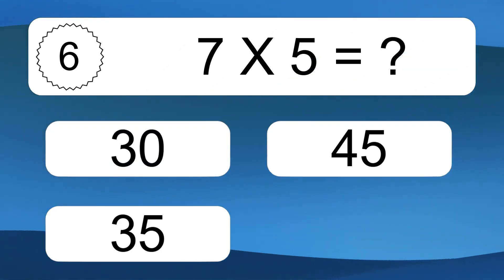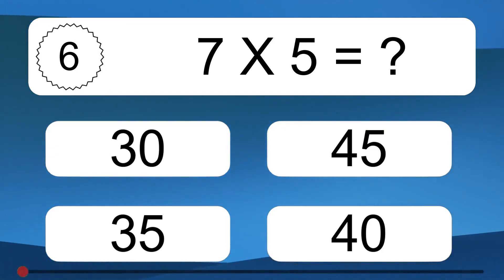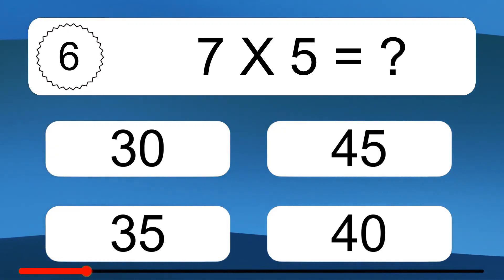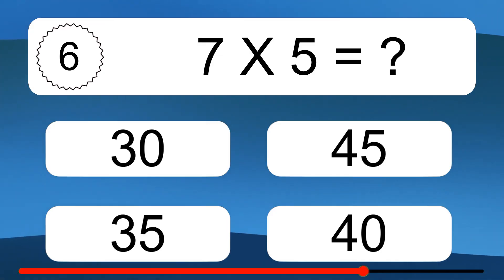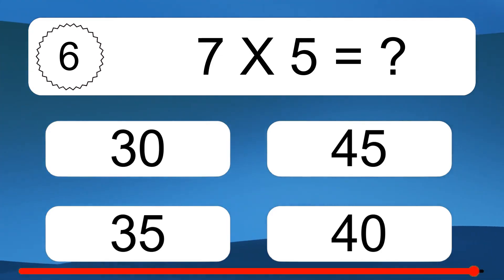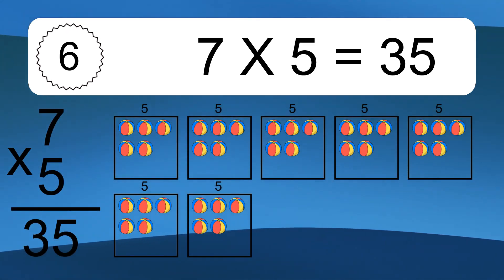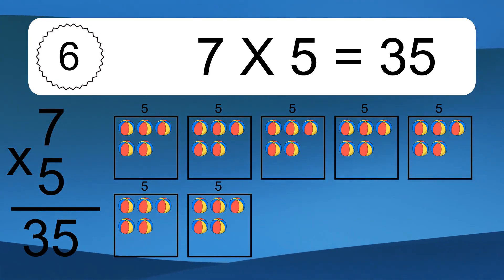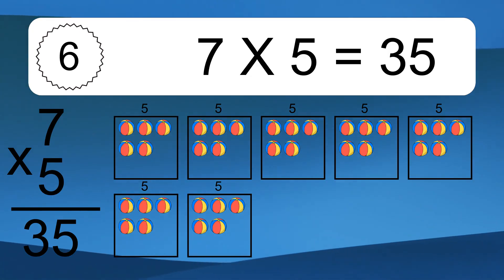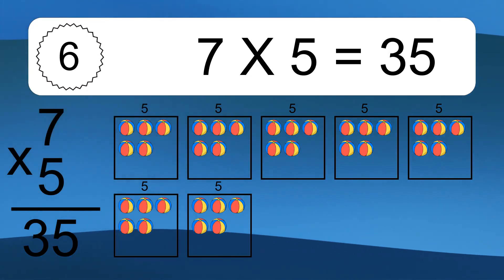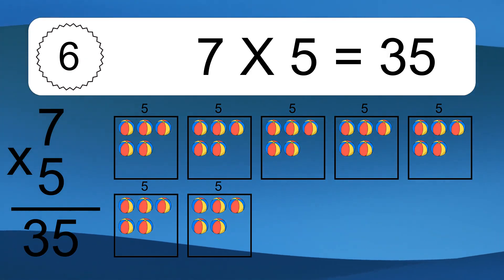7 times 5 equals what? 7 times 5 equals 35. We have 7 boxes, and each box has 5 colorful balls inside. If you count all the balls in all the boxes together, you will have 7 times 5 balls. This equals 35 balls.